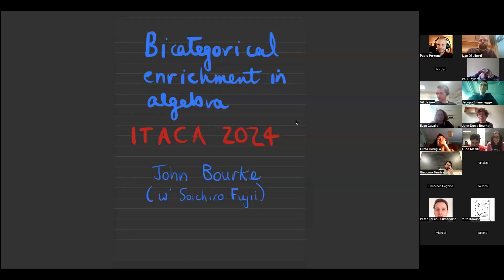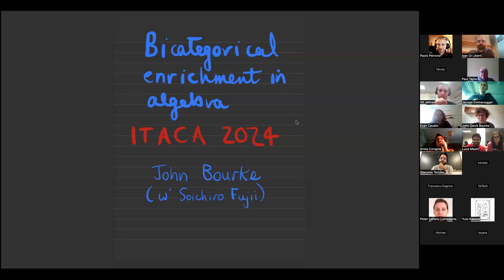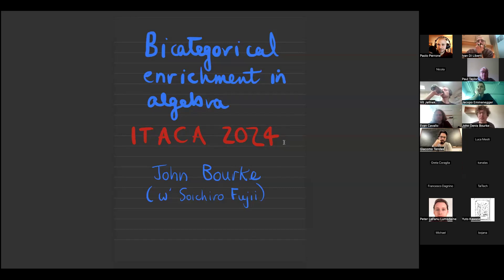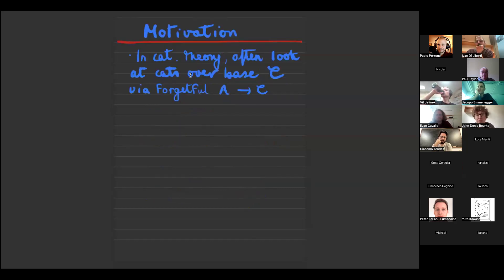Hello everyone and welcome to this new edition of the ITaHa Fest. Today we start with John Bourke and the first talk is going to be 'Bicategorical Enrichment in Algebra.' Thanks very much for the invitation. This is joint work with Soichiro Fujii, who's recently joined us in Verona as a postdoc, and it's kind of work in progress.